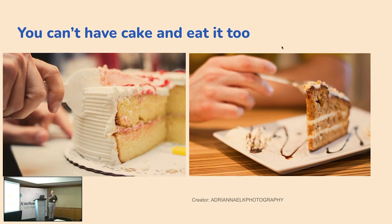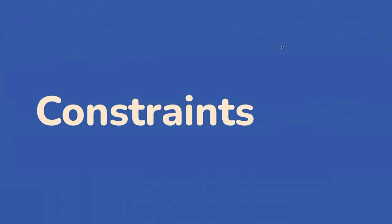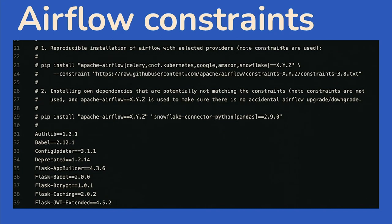Meet constraints. Is anyone familiar with the requirements.txt file? A lot of people see constraints and think they look like requirements files — they are not. What constraints do is tell pip: if this particular dependency is installed, it will be installed in the version specified here. It doesn't force installation, but it pins the version if it does get installed. And importantly, this is only enforced at the time of first installation.